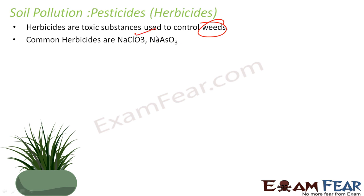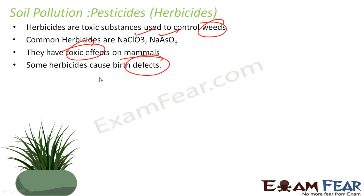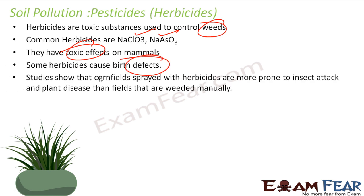Common herbicides are NaClO3 and NaSO3, and they have toxic effects on rats. They also cause birth defects and are not good. It has also been shown that using herbicides in corn fields makes crops more prone to insect attack and plant disease.